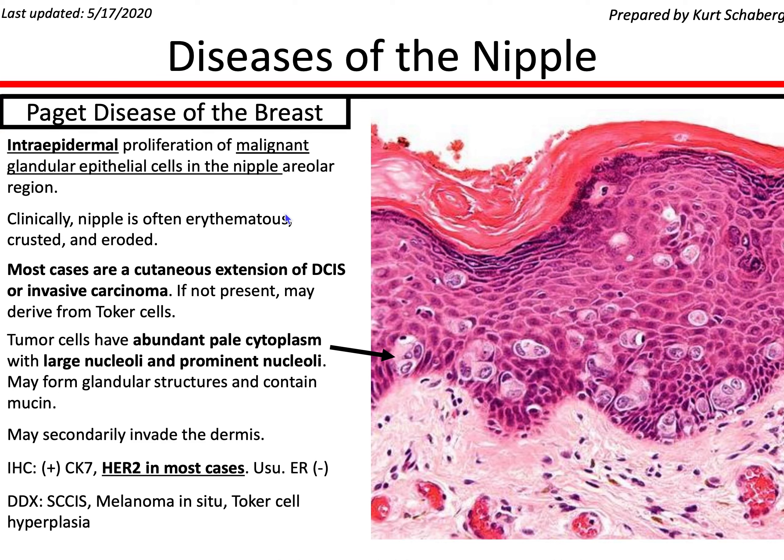Hello, welcome to Pathagonia. This is Jay. Today we're going to talk about diseases of the nipple using excellent Kurtz notes. We're going to talk about one malignant entity and three benign entities. Let's begin with the malignant entity, Paget disease of the breast.